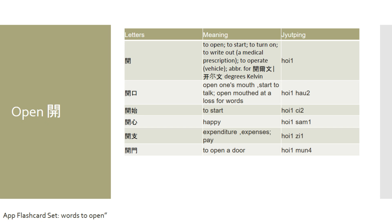The second Chinese character I want to talk about is 'open,' or 'to start,' or 'to turn on' in Cantonese — it is pronounced 開. When in combination with other Chinese characters, it produces many other words with different meanings. For example, if you want to say 'to start to talk' or 'open one's mouth,' you will say 開口.